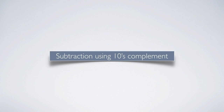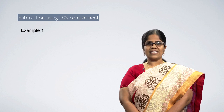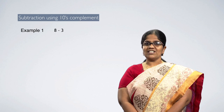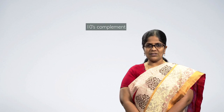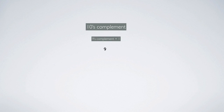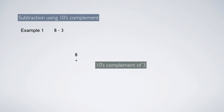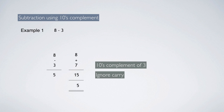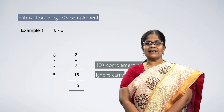Now let us see subtraction using 10's complement, taking the same example: 8 minus 3. The first number 8 is left as it is. For the second number 3, first take 9's complement — 9 minus 3 is 6 — then add 1, giving 7, which is the 10's complement of 3. Add 8 and 7; the answer is 15. In 10's complement, when we get a carry, discard or ignore it. So the answer is 5. In decimal subtraction also, 8 minus 3 is 5 — the same answer is obtained.